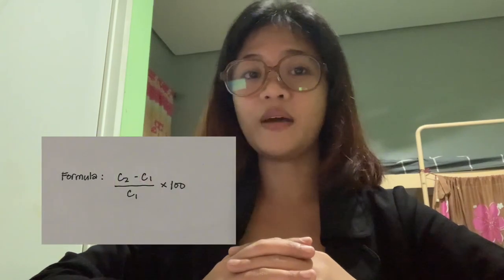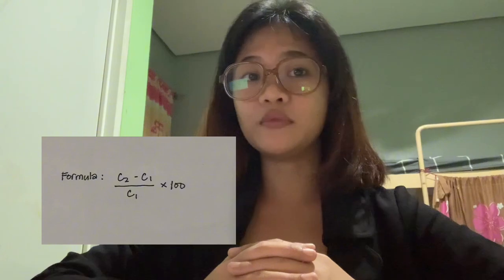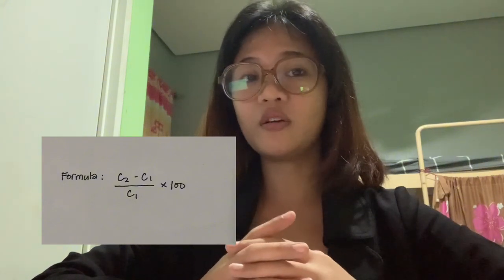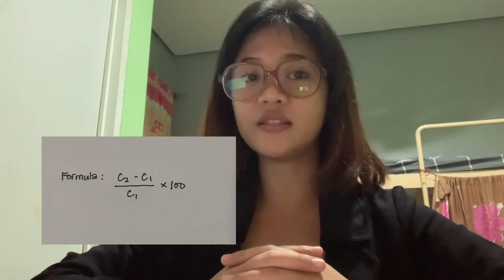Let's proceed to the question: how do we compute inflation rate using basket cost and consumer price index? I'm going to give you the formula. Inflation rate equals C2 minus C1 over C1, multiplied by 100. C2 is the market basket cost of the current year, while C1 is the market basket cost of the base year.